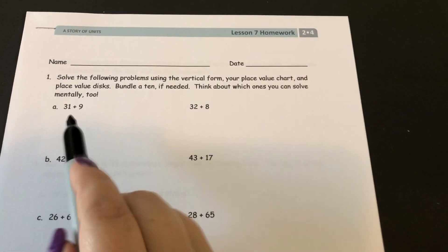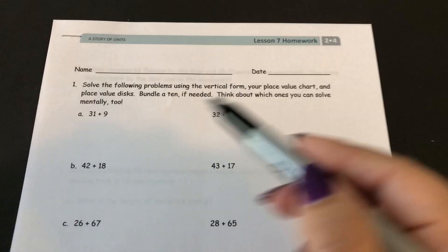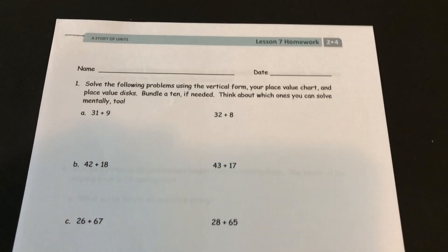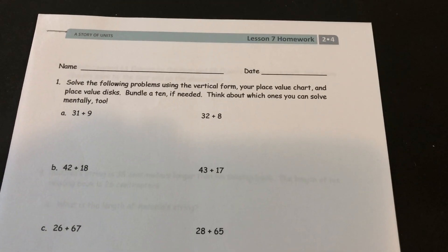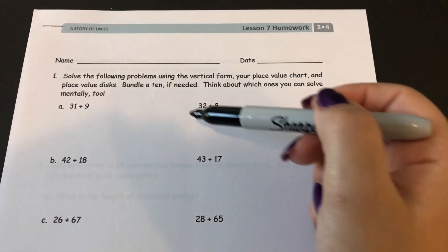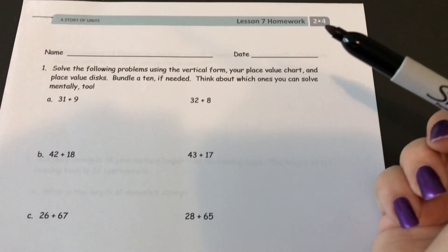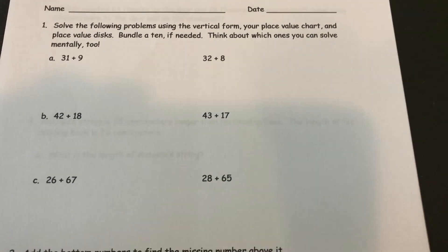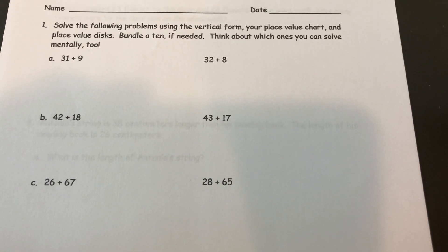Think about which ones you can solve mentally too. For A it shows us 31 plus 9 and also 32 plus 8. I will use the vertical form for this one and then I'll show you the place value chart for this one. You can solve these however you want, vertical form or place value charts with disks.